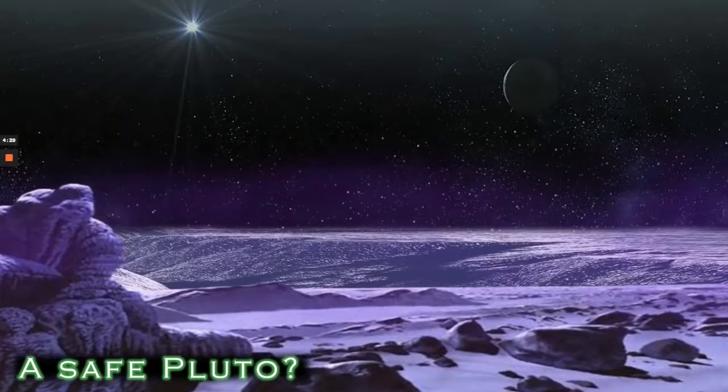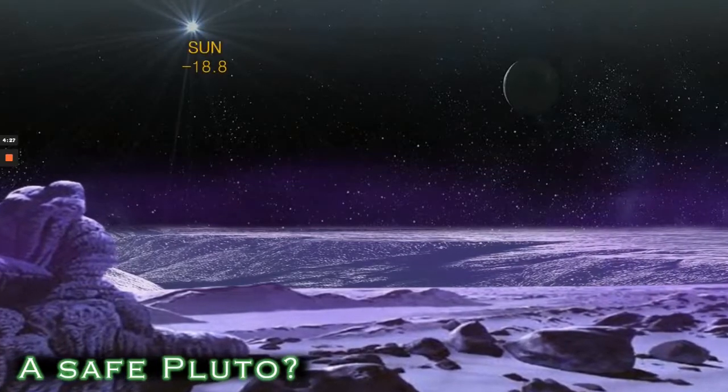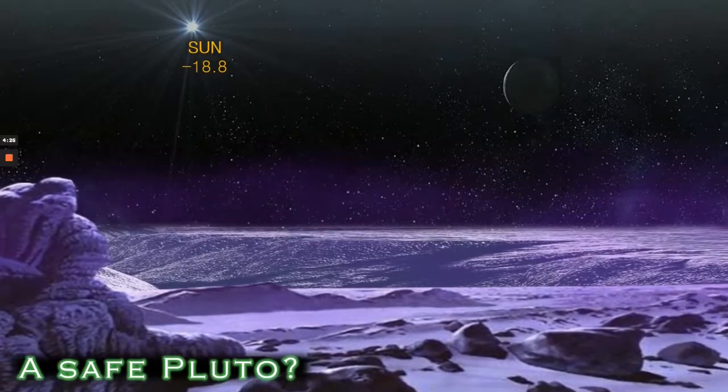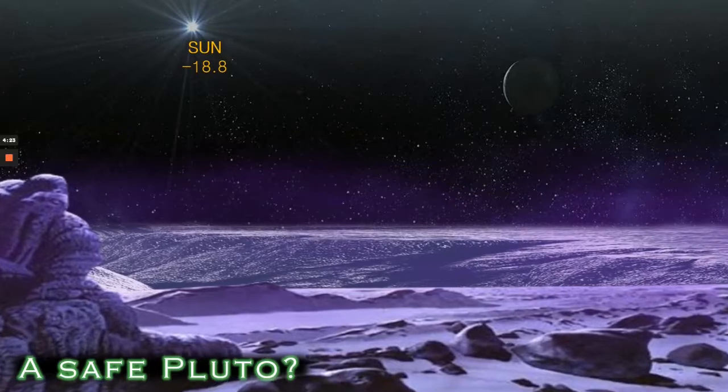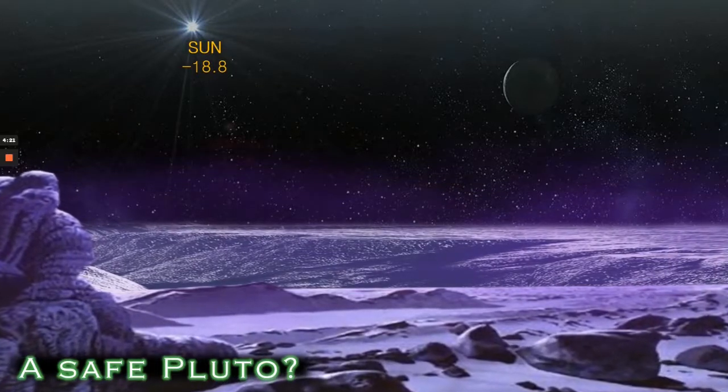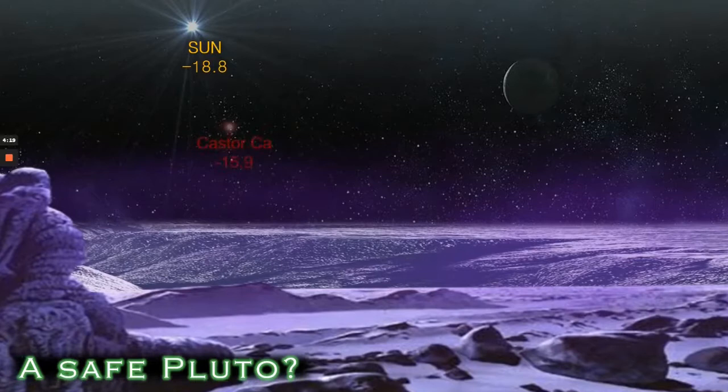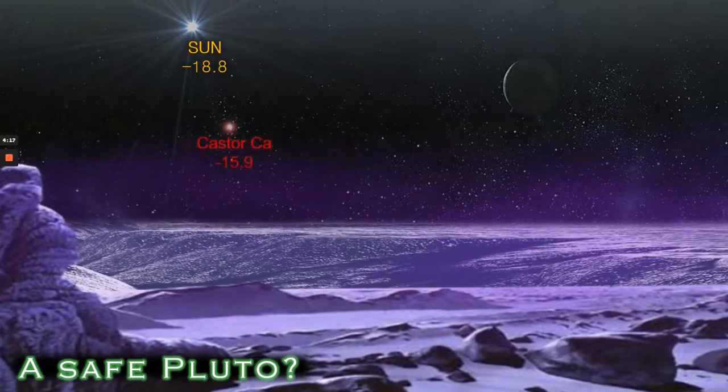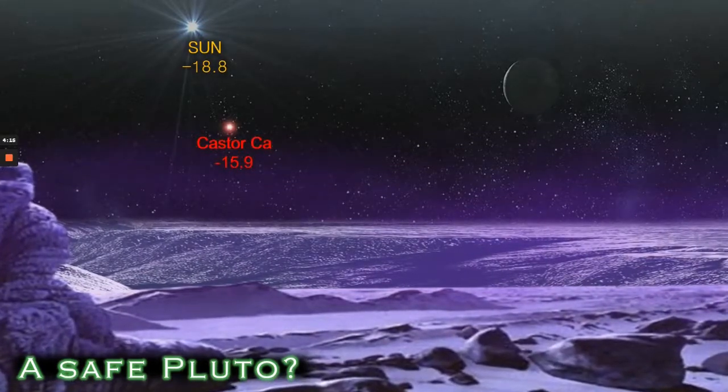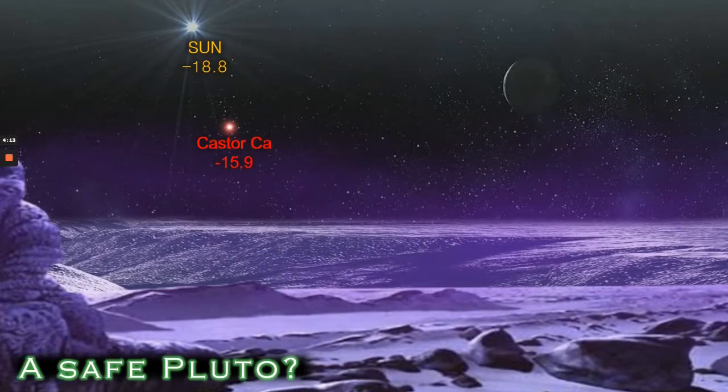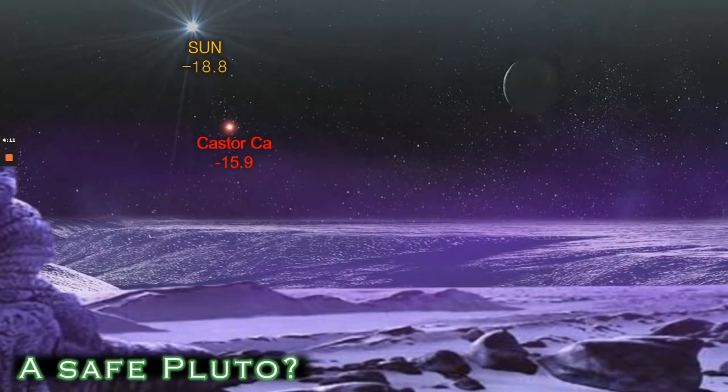Here we see the sun shining on Pluto at minus 18.8. As we already know it does illuminate Pluto to some degree but offers precious little heating to Pluto's minus 230 degree surface temperature.